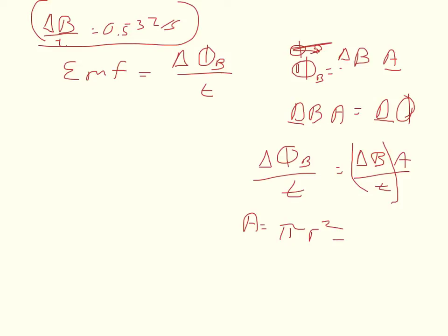Make sure you convert R into SI units. And then you just substitute, so you get that the EMF is equal to delta B over T times pi times R squared times the sine of theta, which is 1.